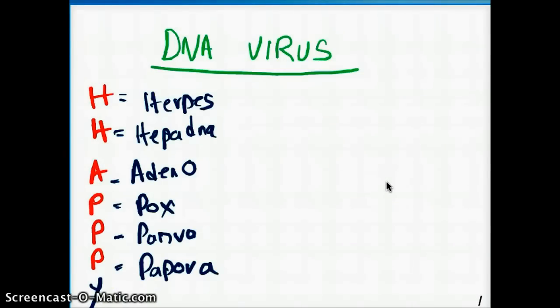To end it all, I just want to say that there is a quick mnemonic to remember all the DNA viruses. And the mnemonic is HAPPY. H is herpes. Hepadna. A for adeno. P for pox. P for papova.